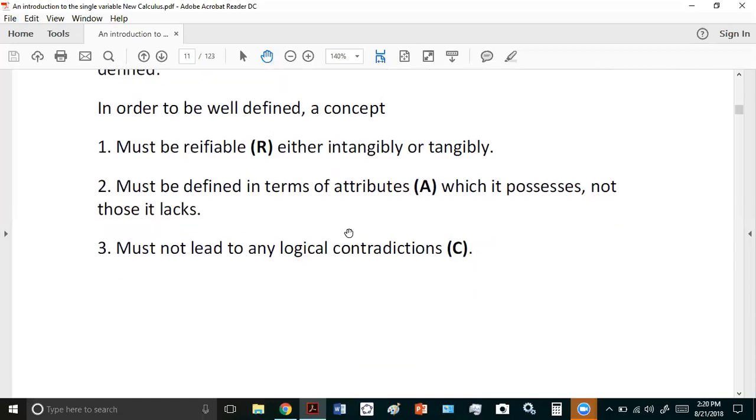Secondly, it must be defined in terms of attributes which it possesses, not those it lacks. So for example, we don't talk about birds in terms of attributes they lack. We don't say they don't have arms and teeth and tails. Well, some of them do have tails, but I think you're able to understand what I'm telling you. If you try to define an object in terms of attributes it does not possess, then many objects are defined that way and there's ambiguity and confusion and chaos. So we need to always define concepts in terms of attributes they possess.